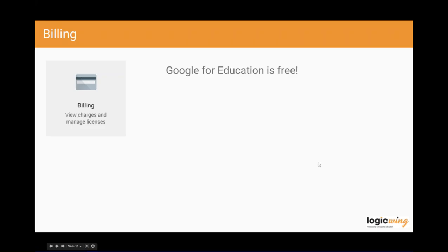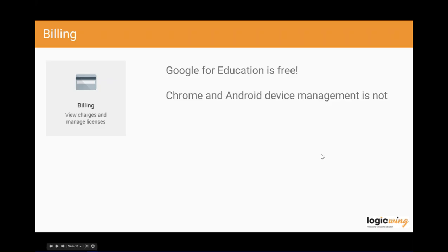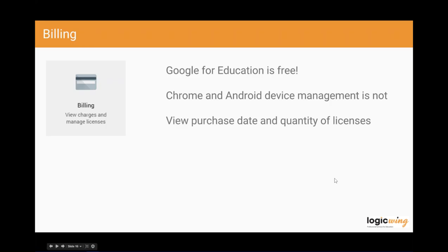Google Apps for Education is free — but it's free like a puppy. You get access for free, but somebody has to manage it, which is why we're talking about administration. There are management licenses you must purchase for Chrome devices and Android devices. Those licenses last for the lifetime of the device — it's a one-time purchase usually made along with the device itself. It allows you to enroll the device in your Google Apps admin console and manage it. You can also view information about when you purchased those devices and how many licenses you have available.